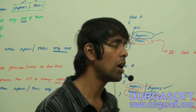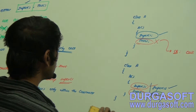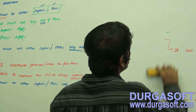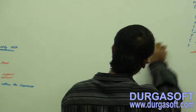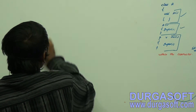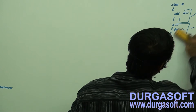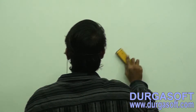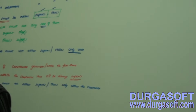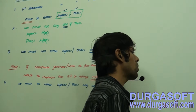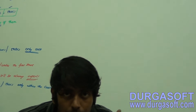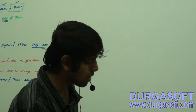Let us look at the difference between the super method, this method, and the super keyword and this keyword. This is very important — most of us will get confused here. Let me make it very simple for you guys so you can use them anywhere without any doubt and with very good confidence.